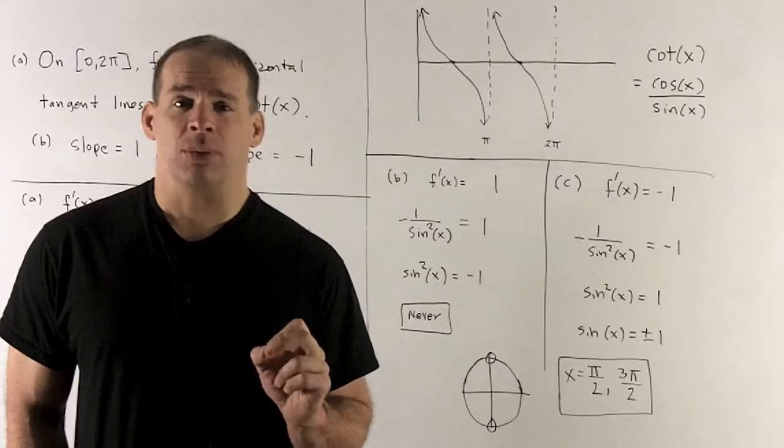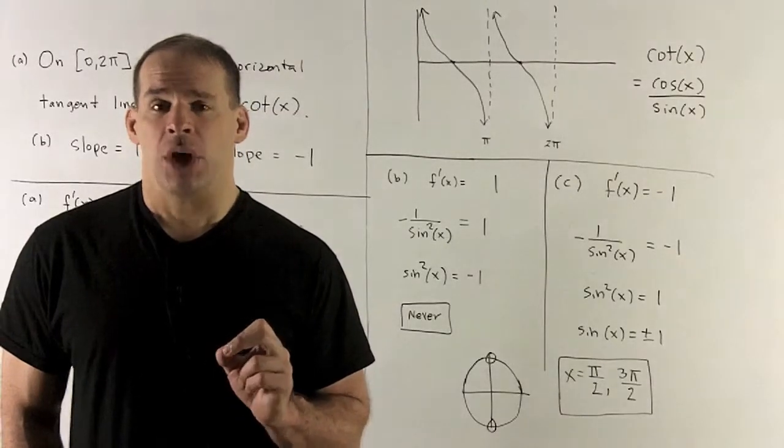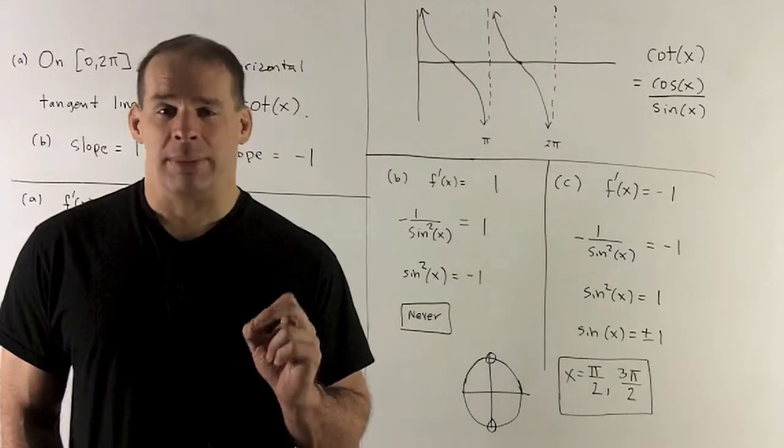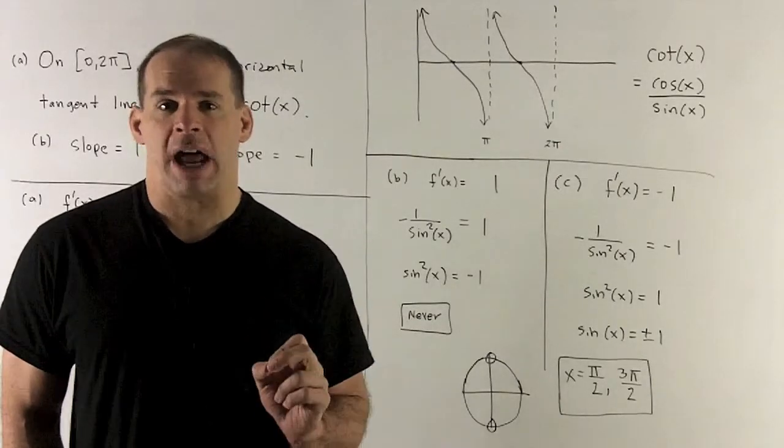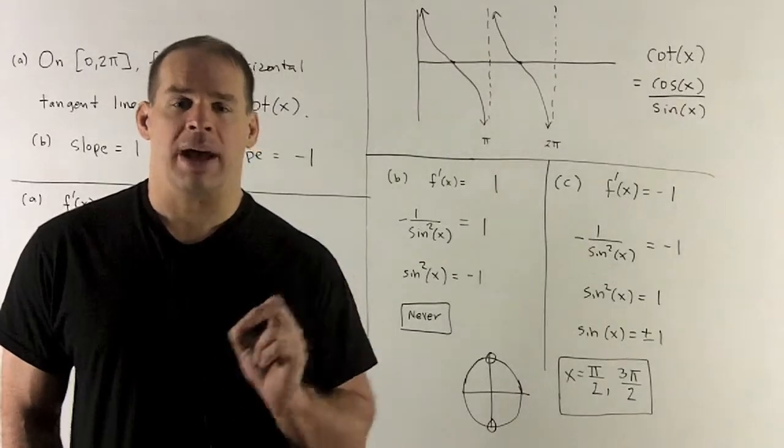Okay, well, sine equal to plus or minus 1. What's the sine? That's the y value in the unit circle. So, if I'm at minus 1 or 1 as a y value, that means I'm either at the top of the circle or the bottom of the circle. So, in our interval, we're looking at pi halves or 3 pi halves.